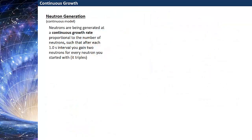A continuous model for neutron generation might be something like this: neutrons are being generated at some continuous growth rate proportional to the number of neutrons, such that after every one-second interval you gain two neutrons for every neutron you started with, or the number of neutrons triples after every one-second interval. The first thing to point out is this continuous growth rate — what we're going to model that by is now a derivative. So the derivative dn/dt is what we'll call our continuous growth rate. It's continuous because it's a derivative rather than a discrete change in the number of neutrons per generation.